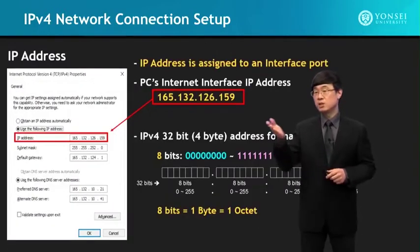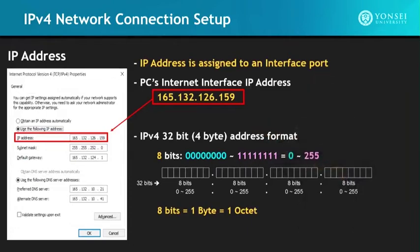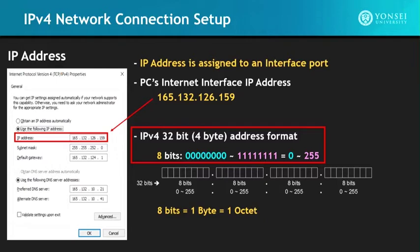Let's look at the IP address first. The PC's Internet interface IP address is 165.132.126.159. The IPv4 32-bit address is listed here in decimal numbers — it's actually binary numbers converted to decimal. The 32-bit address is a combination of 4 bytes, and each byte is 8 bits. One byte is also called one octet, so a byte and an octet are the same thing — each 8 bits.